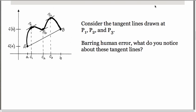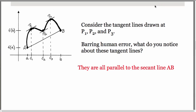Barring any human error that was made in drawing this graph, what do you notice about these tangent lines? Well hopefully you'll notice that they're all parallel to each other as well as to the secant line AB.